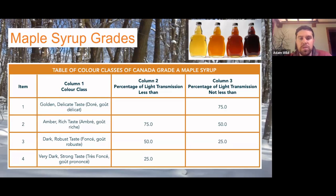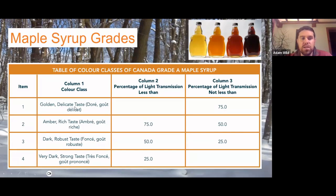Grading is technically based on the amount of light transmittance that shines through the syrup. Golden color is based on 75% or more light transmittance. Amber is between 50 and 75%. Dark is between 25 and 50%. Anything below 25% is very dark maple syrup.